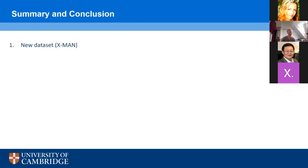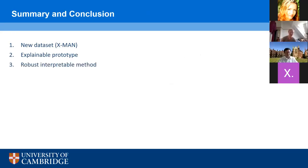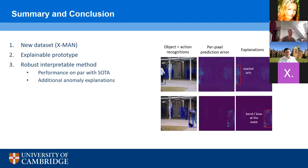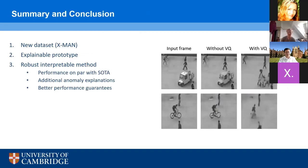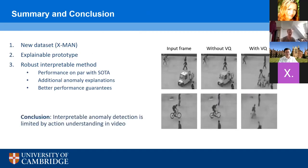In summary, I have developed a new dataset for benchmarking the task of anomaly explanations, and I have developed an explainable prototype to explain and detect anomalies — this method was accepted to one of the best machine learning conferences in the world. I then addressed the shortcomings of this method by developing a more robust but still interpretable method, with performance on par with state-of-the-art while additionally being able to provide explanations of detected anomalies and better performance guarantees. I also concluded that at the moment, interpretable anomaly detection is limited by the state-of-the-art in anomaly detection understanding in video. Thank you very much.